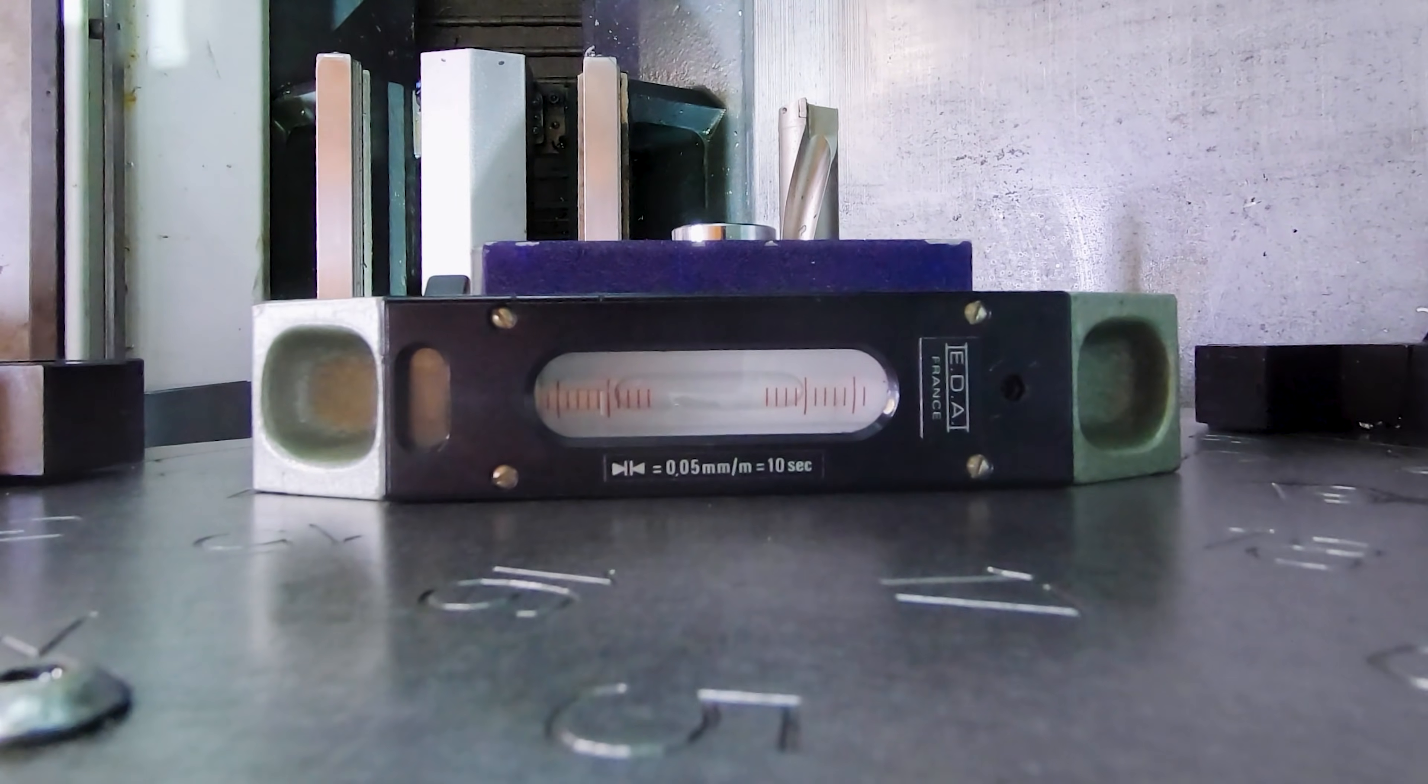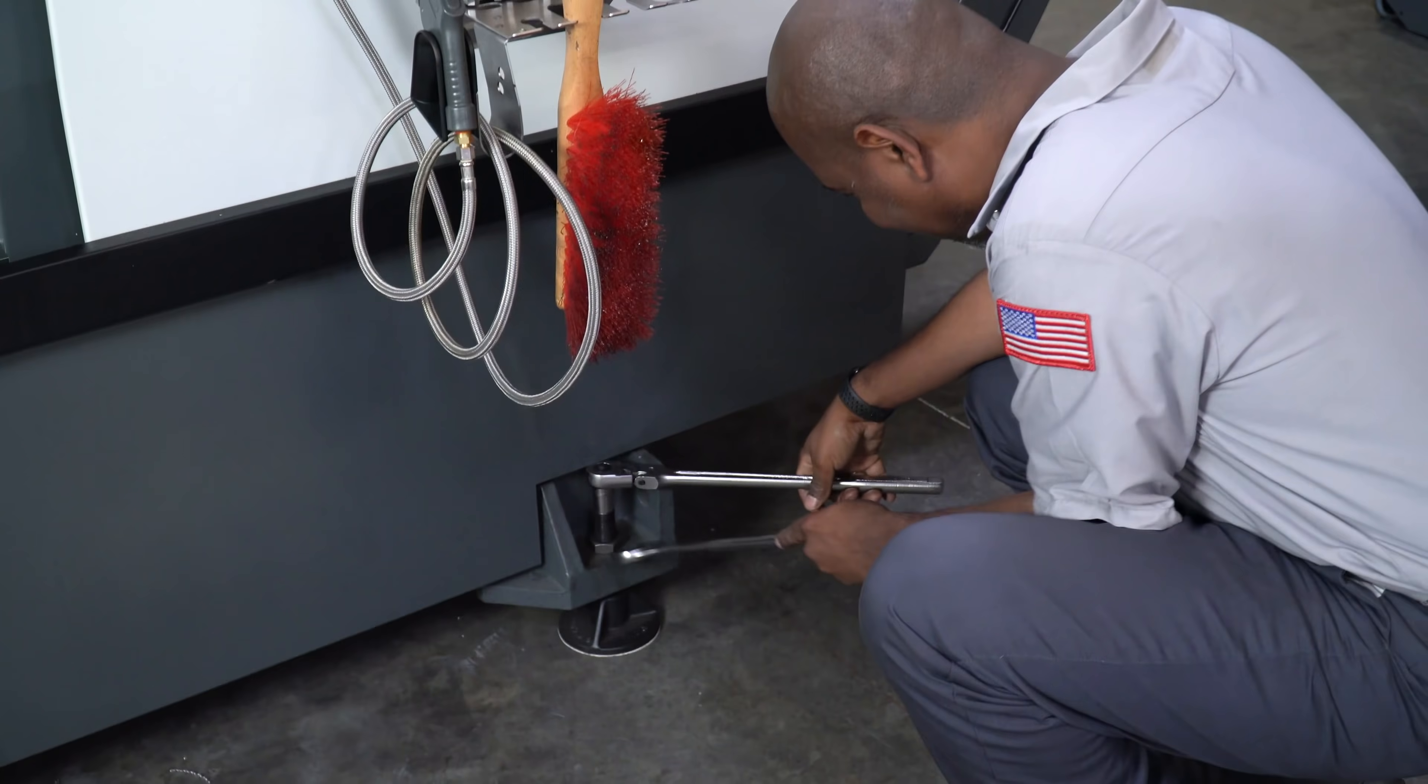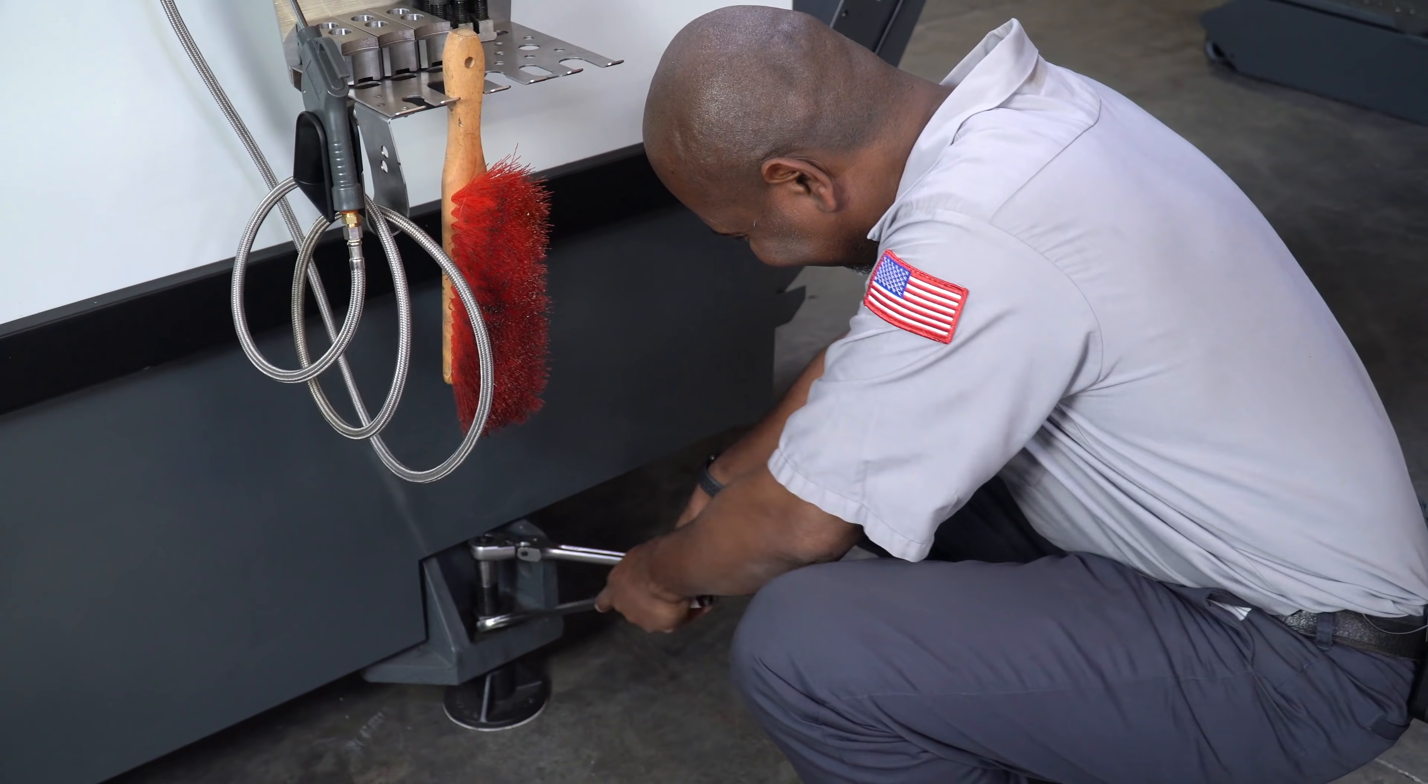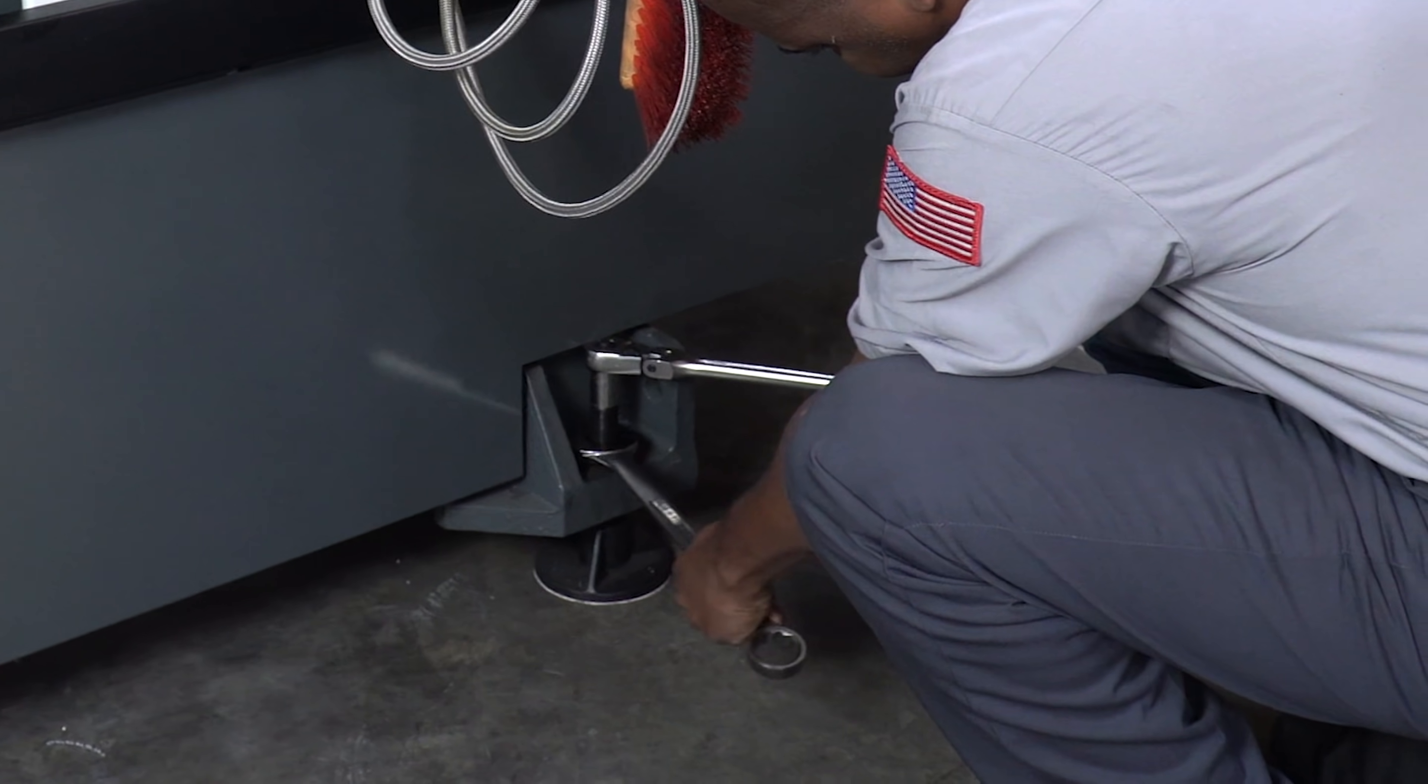Once the machine level is complete, use the jam nut to lock the leveling screws in place. Hold the leveling screws in place while you tighten the jam nut.